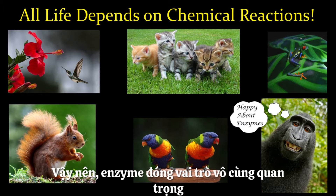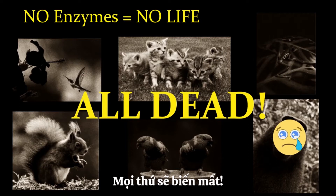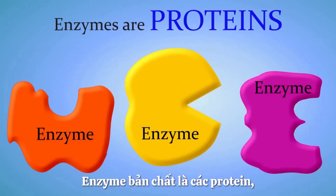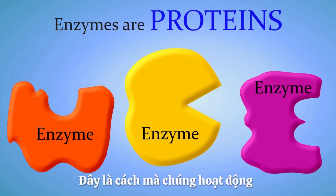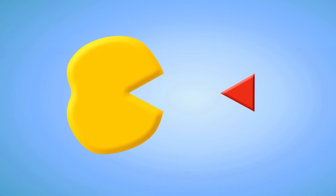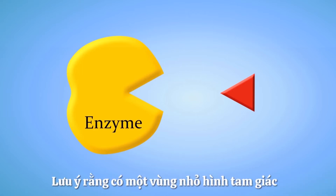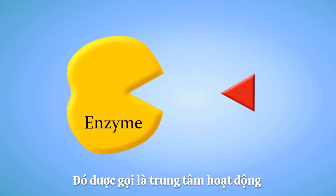Enzymes are super important — no enzymes, no life. So what are enzymes? Enzymes are proteins that speed up chemical reactions to make them happen. The pac-man looking thing on the left is an enzyme. Notice that it has a little triangular region that looks like its mouth — that is called the active site.